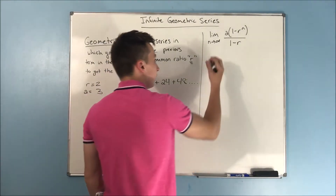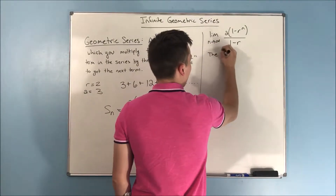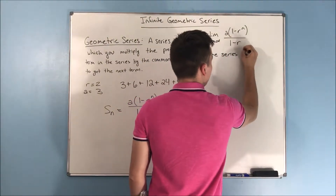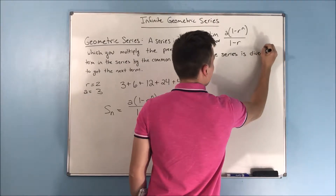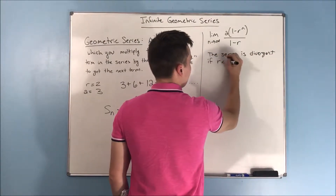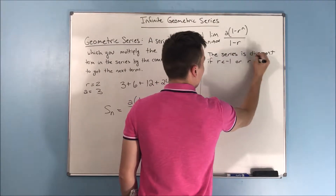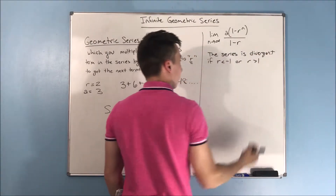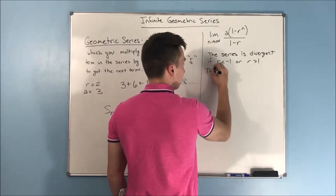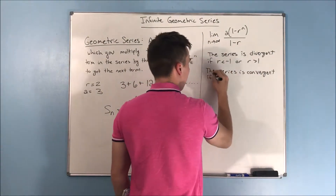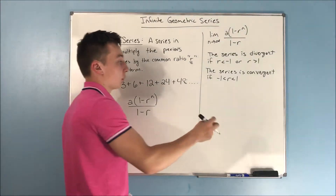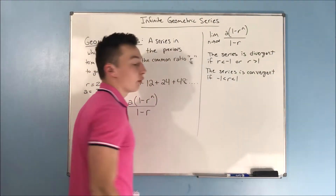The series diverges if r is less than negative 1 or r is greater than 1. Meaning the series is convergent if negative 1 is less than r is less than 1 — so if r is between negative 1 and 1.